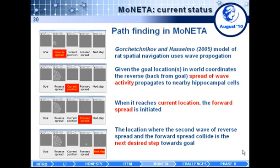This is the hippocampus module, modeled after Anatoly's PhD thesis, which helps the animal find paths in the virtual environment. Given the goal location in world coordinates, the system initiates a reverse spread. When the reverse spread hits the current position, a forward spread is initiated. When this forward spread collides with the second wave of the reverse spread, that collision point is the next step in the animal's path — guaranteeing the shortest linear path to the goal.